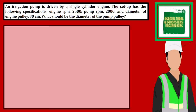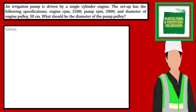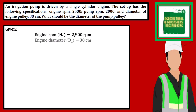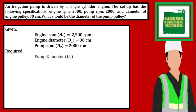The first thing we have to identify are the givens. We have the engine RPM to be 2500 — this will serve as N1. The engine diameter is 30 cm — this will be D1. The irrigation pump RPM is 2000 — this will be N2. The required in the problem is the pump diameter.